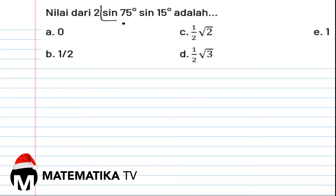Kita lihat bentuk sin 75 derajat, dijabarkan menjadi sin 90 derajat min 15 derajat, sama dengan cos 15 derajat. Sin 75 derajat berada di kuadran 1.